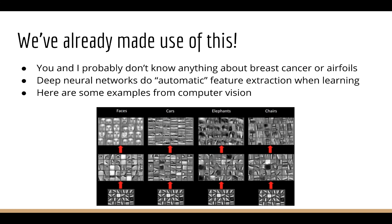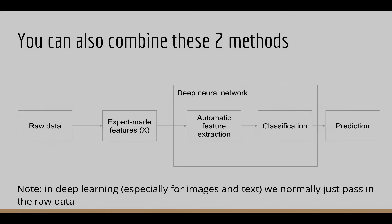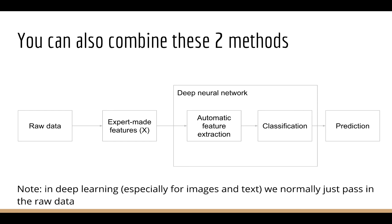Now I want to point out that we've already taken advantage of this mathematical approach in this section. You and I probably don't know too much about breast cancer or airfoils. And yet we were able to build some pretty accurate models for those datasets. How is this possible? Well, it's because models like deep neural networks do automatic feature extraction when they are learning. Now, of course, you're going to learn a lot more about this in the future, so don't worry exactly how this works right now.